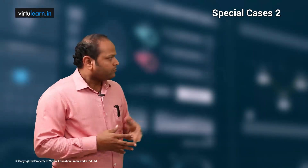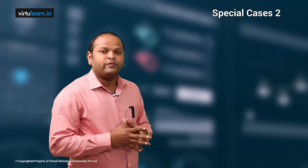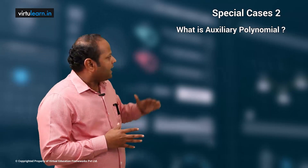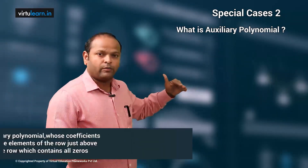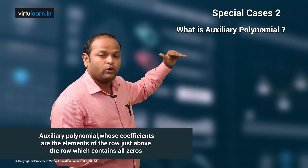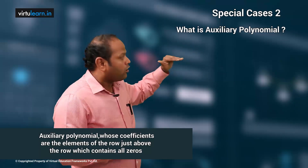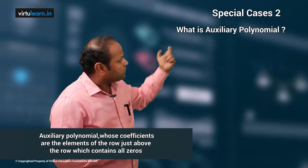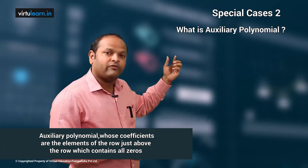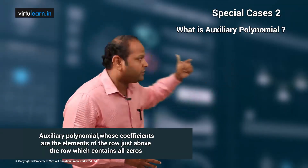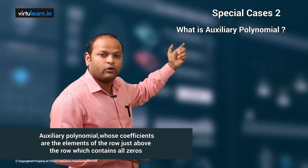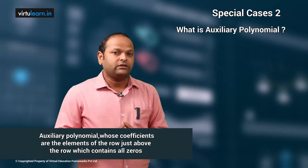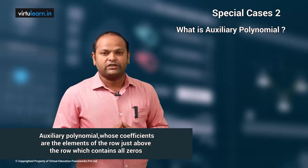To proceed further, we need to form an auxiliary equation. The auxiliary equation is formed from the coefficients of the row just above the row that contains all zero elements. For example, if the S⁴ row contains all zeros, we take the coefficients from the S⁵ row to form the auxiliary equation.